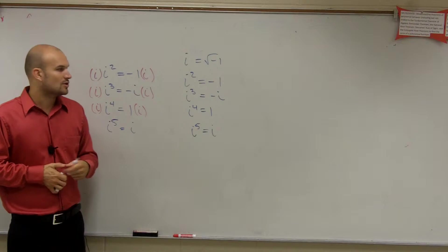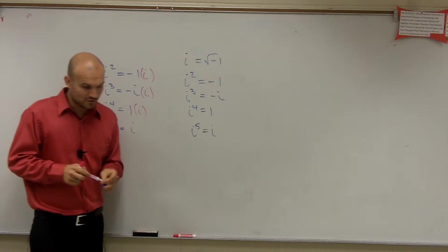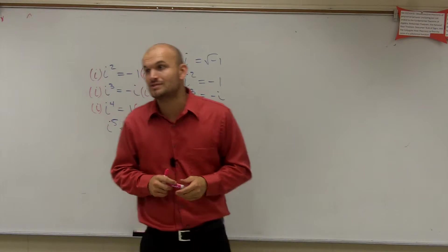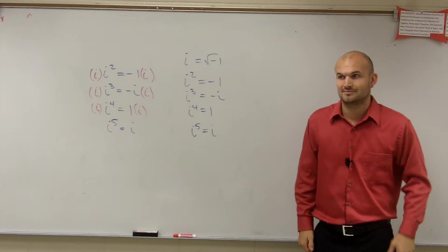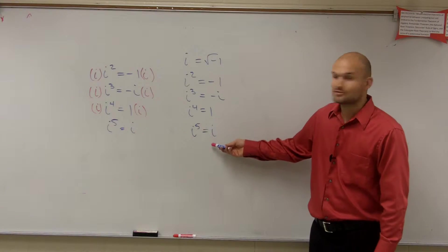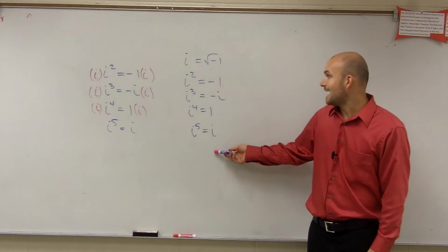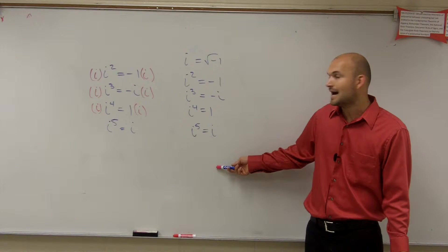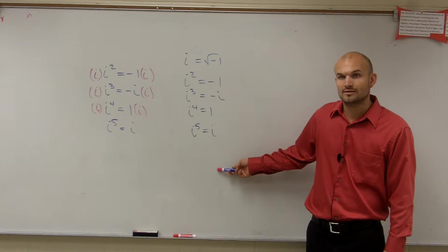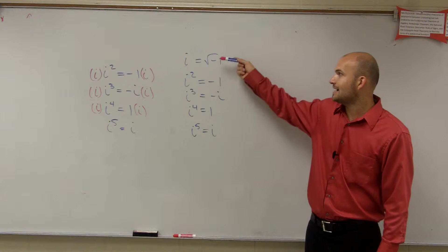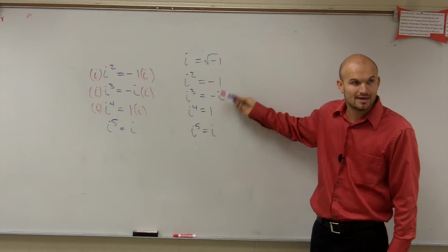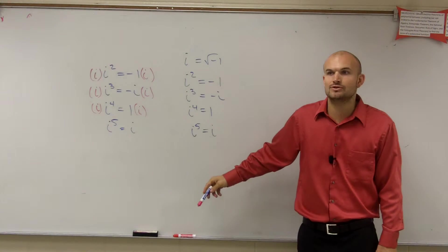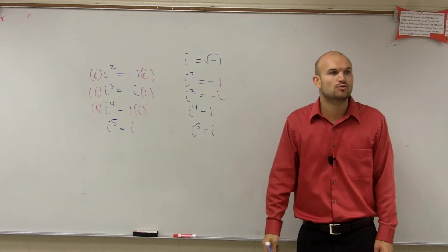So using your reasoning, what would you say i to the sixth is going to be? i to the sixth would be what? Yeah, negative 1, right? i to the seventh, negative i. i to the eighth, 1. So if i to the fourth is 1, i to the eighth is 1, what would you reason i to the twelfth would be?